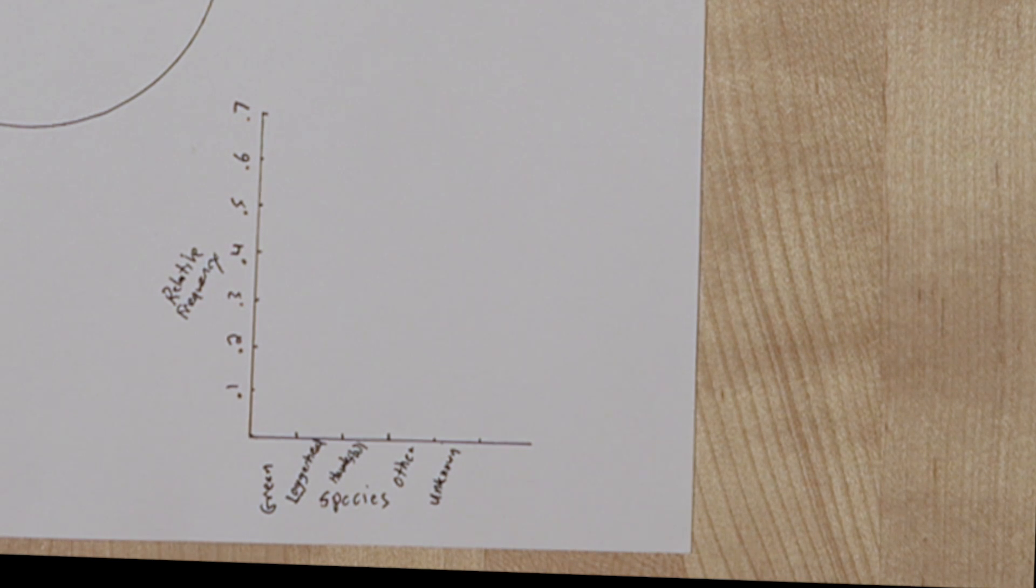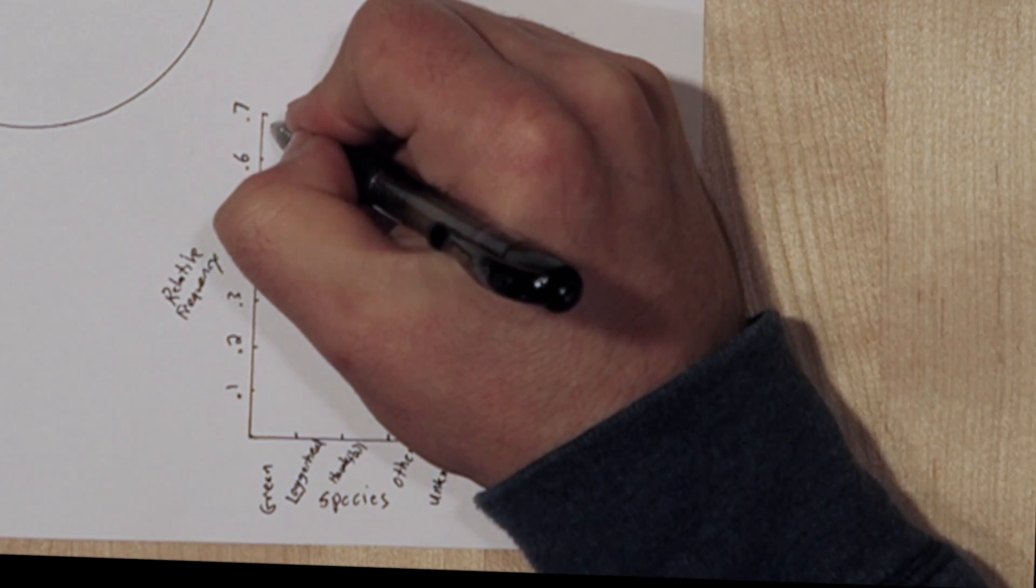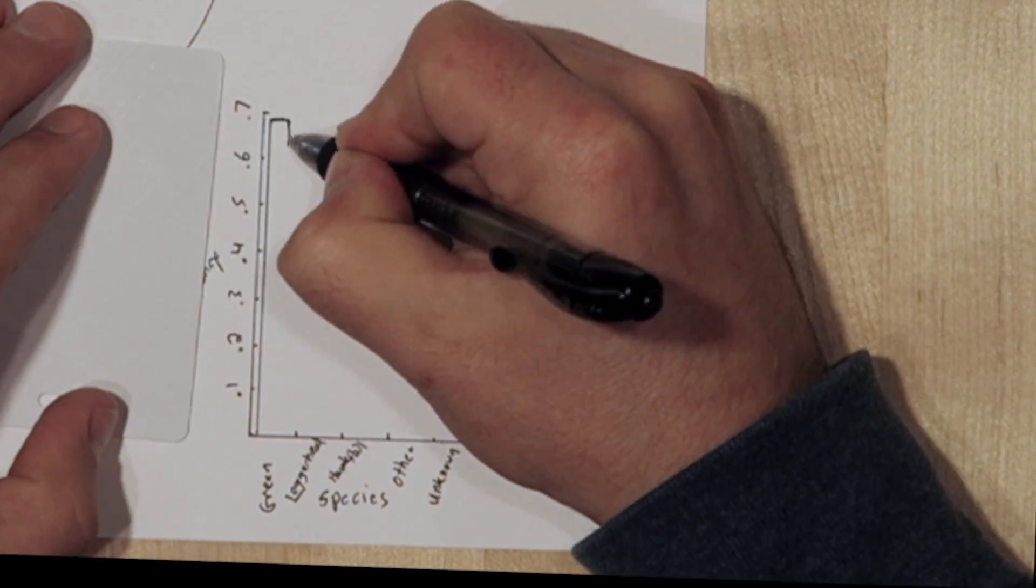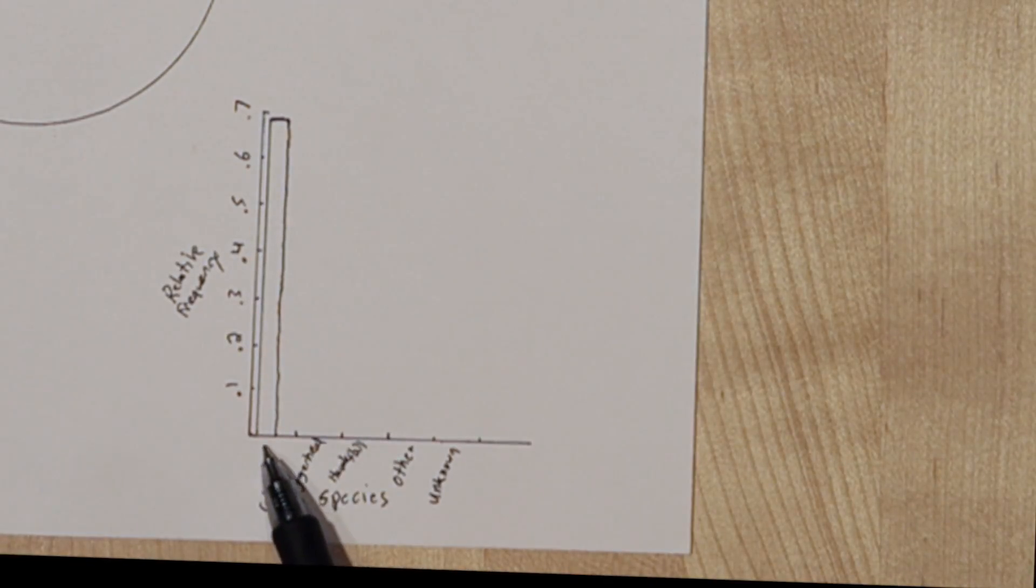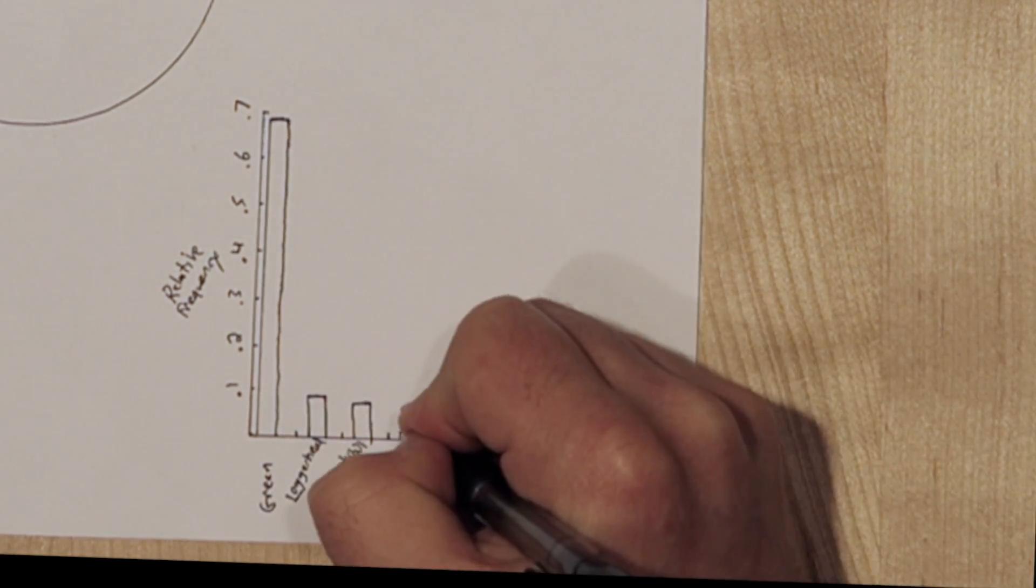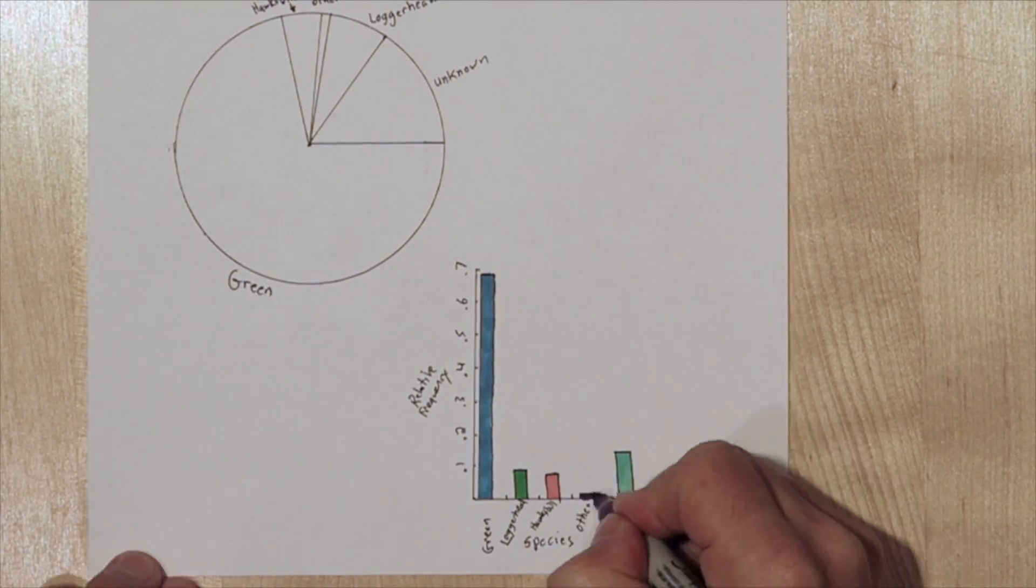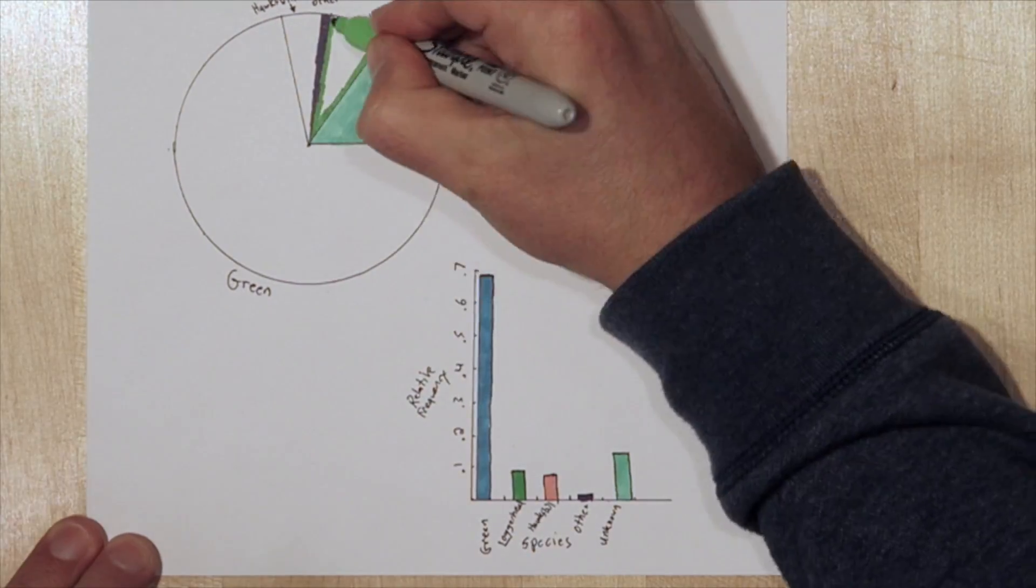So green turtles were almost 70%, so that's way up here. Now I need to leave space in between my bars since we're representing a categorical variable. So there's two ways to display this data, and of course adding color helps.